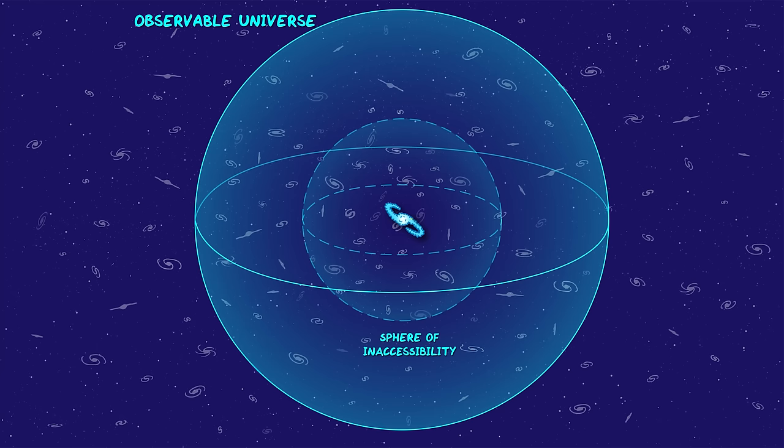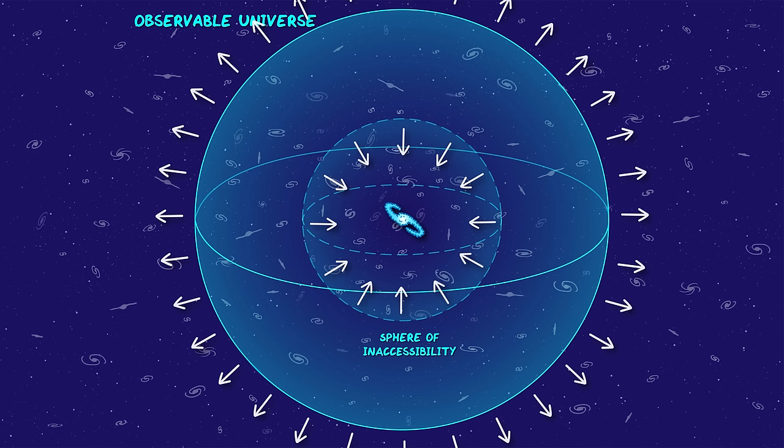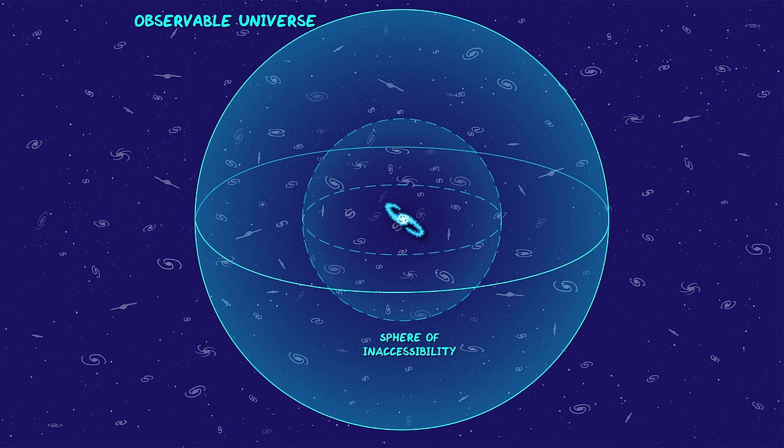Okay, now on to the last bit of this video, which is really kind of mind-bending. So we have two boundaries in our universe. One is the edge of the observable universe, and the other is this sphere of inaccessibility, where no signal we send today will ever be able to reach beyond it. The question is, how will these boundaries move in the future? For each one, will it get bigger or smaller, or stay the same size?